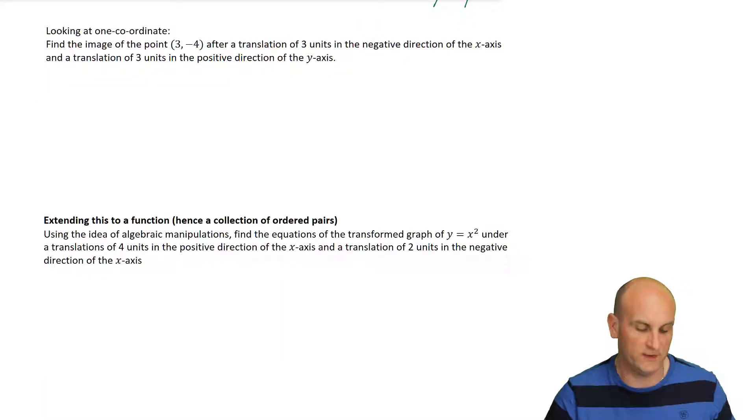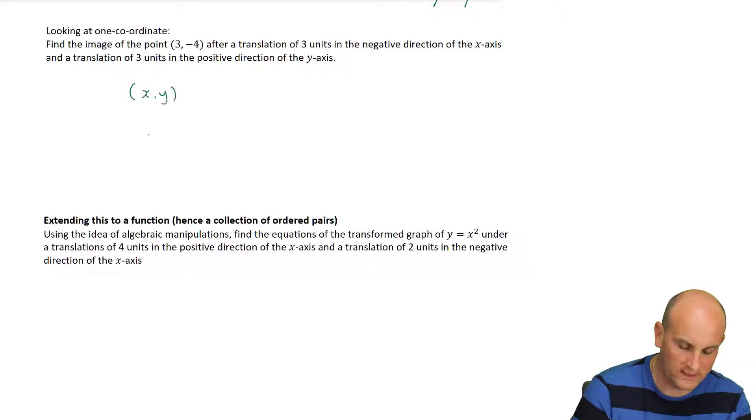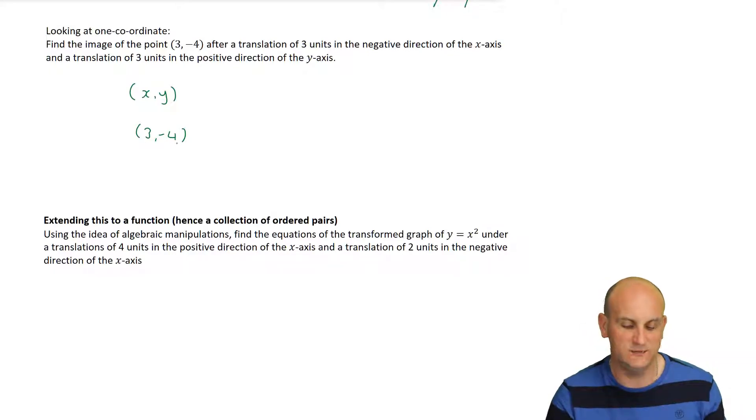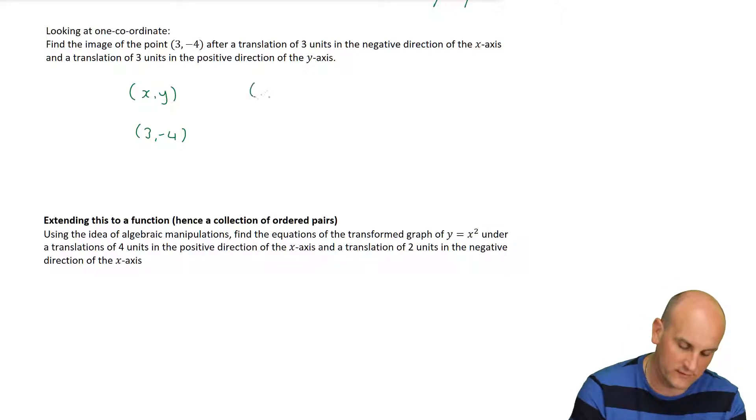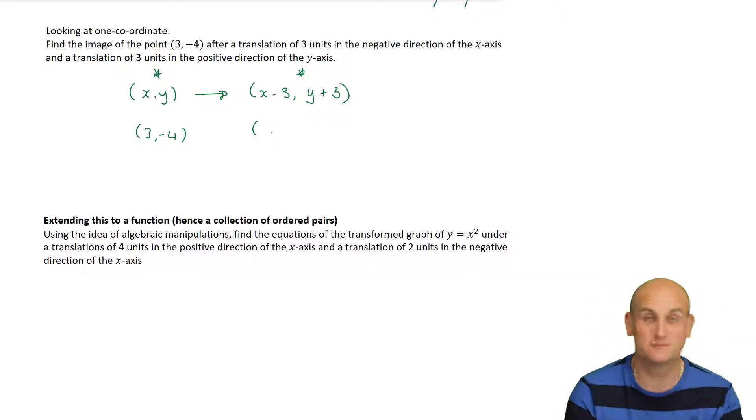Let's look at one coordinate first. Find the image of the point. So, we've got an original point. So, my x comma y is given by three comma minus four. After a translation of three units in the negative direction of the x axis, so I'm going to take three away from my x values, and a translation of three units in a positive direction of the y values, y plus three. So, what I'm saying is, here is my original, and here is my image. So, because I'm going to subtract three from my x value, this is now going to become zero, and then I'm going to add three to that value to give me negative one.